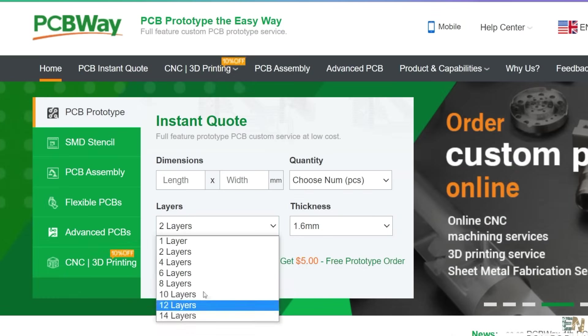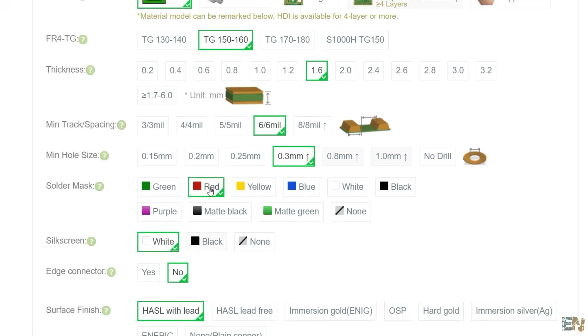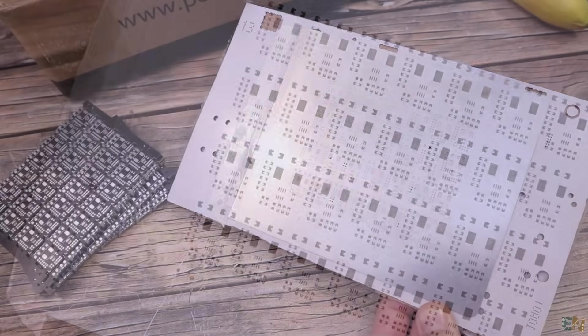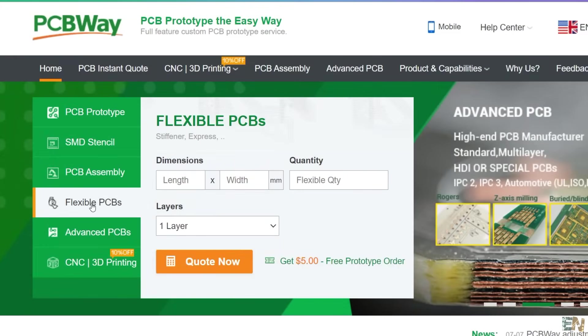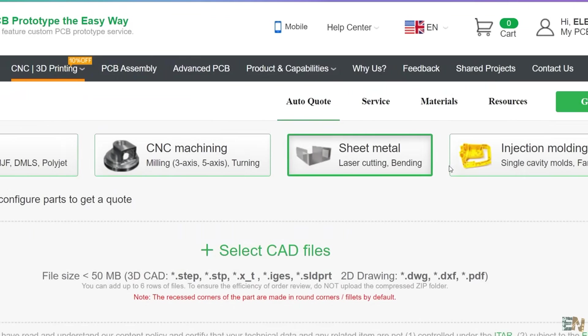So consider using the services of PCBWay and get very good tracks, good finish, the color that you want for your PCB, the size that you want, the gold finish, the stencil for soldering the SMT and a lot more services on PCBWay.com including 3D printing, metal working with CNC milling and so on. So check PCBWay.com for more services.